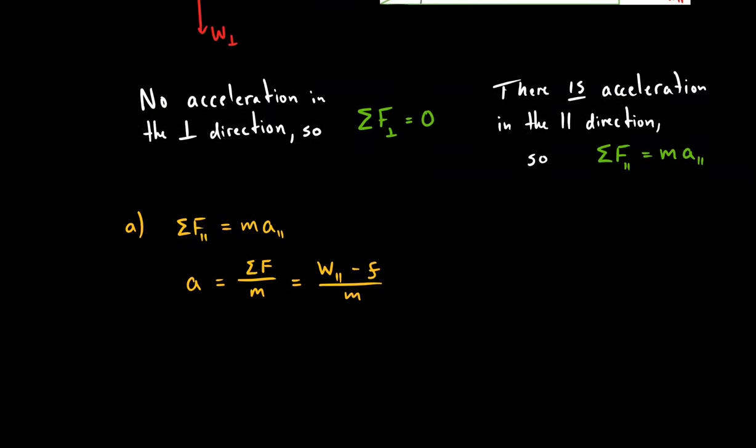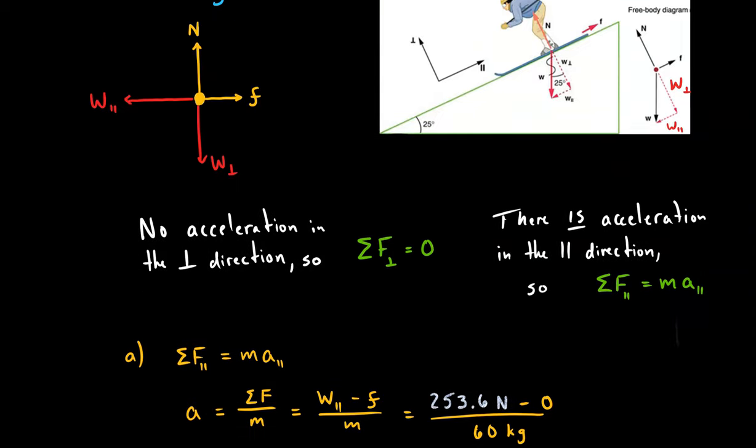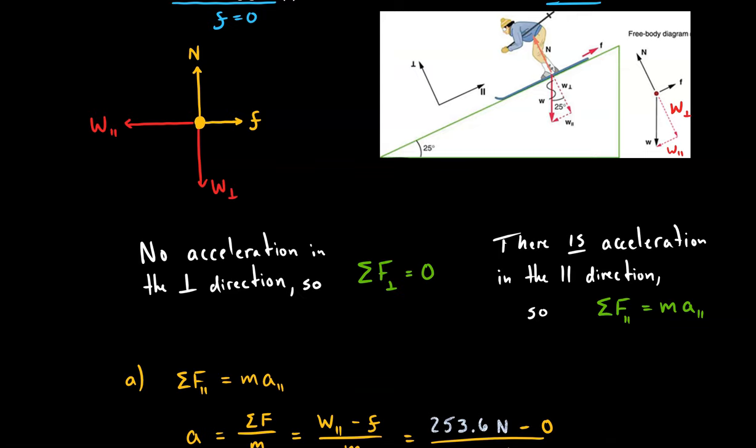So we have that. Now, what do we know when we start plugging stuff in? Well, remember the friction in part A was negligible. So we make that zero. We know the parallel component, after we do a little trig by solving for that, we know this parallel component is equal to 253.6 newtons.